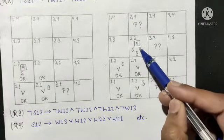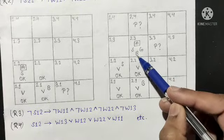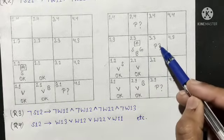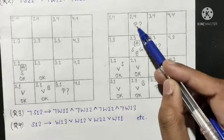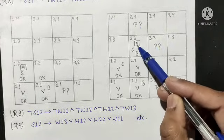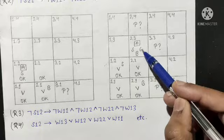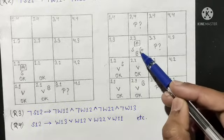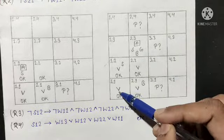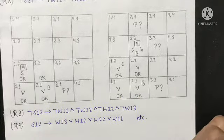In room 2,3, the agent also feels some breeze, implying there can be a pit either in room 2,4 or room 3,3. But the agent has already seen the gold, so the agent grabs the gold and returns to the starting point without getting killed by the Wumpus.